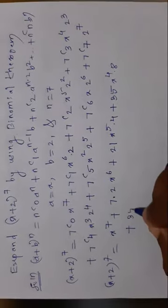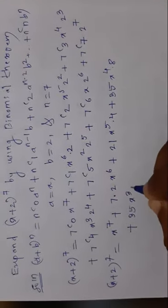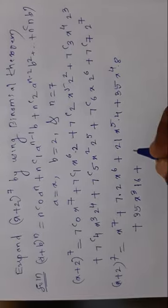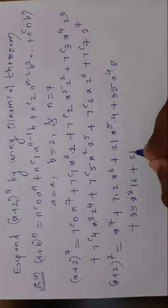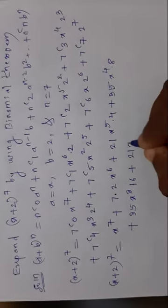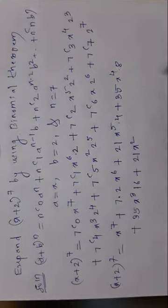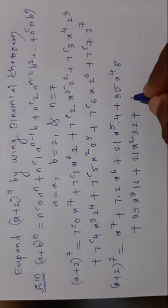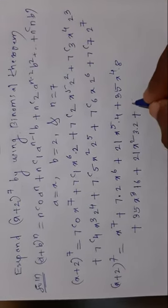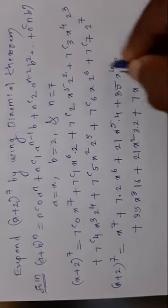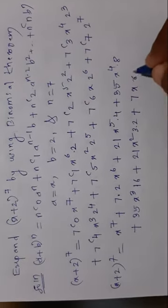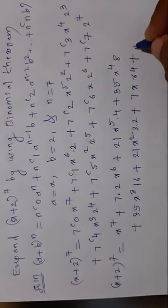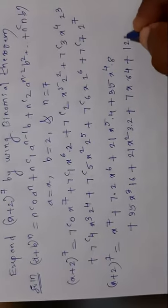7C4 = 35, so the fifth term is 35 · 16 · x³ = 560x³. 7C5 = 21, so the sixth term is 21 · 32 · x² = 672x². 7C6 = 7, so the seventh term is 7 · 64 · x = 448x. 7C7 = 1, so the last term is 2^7 = 128.